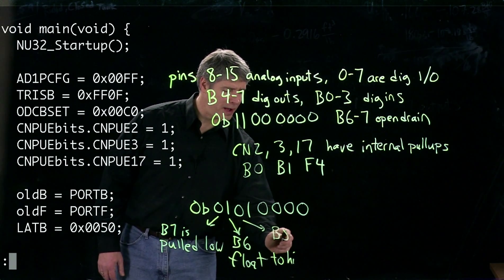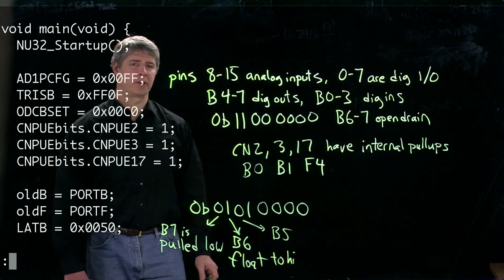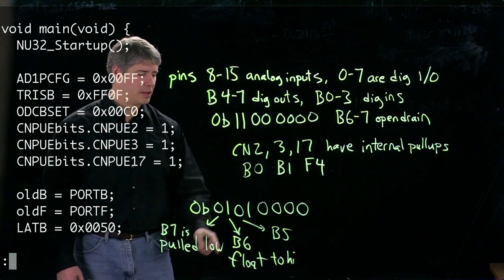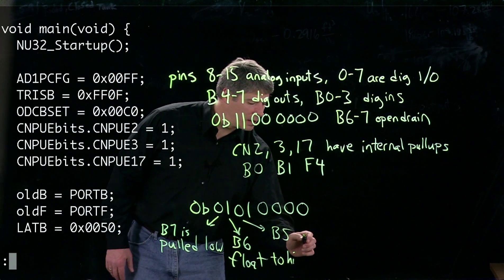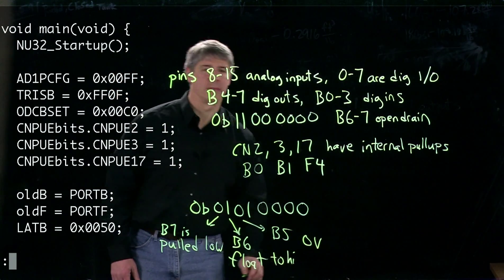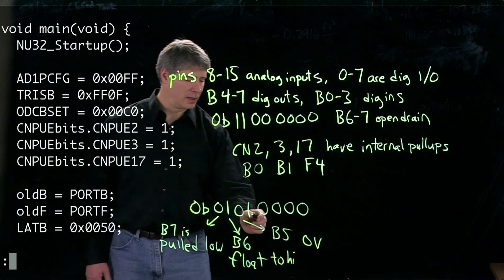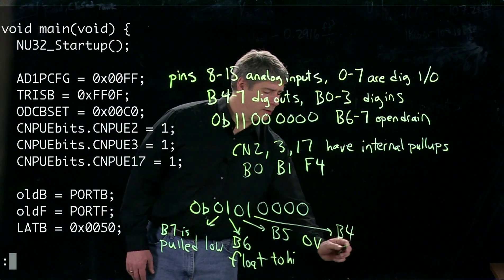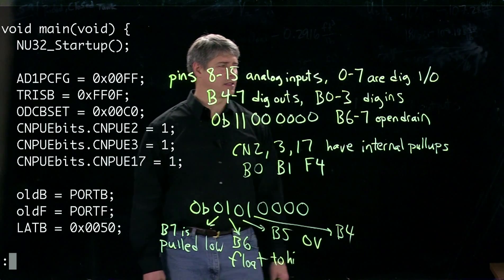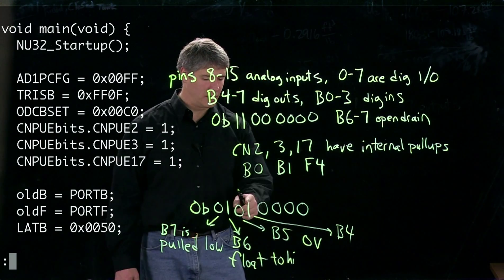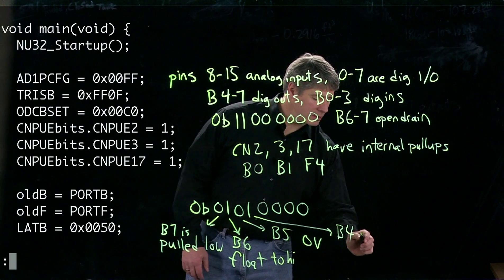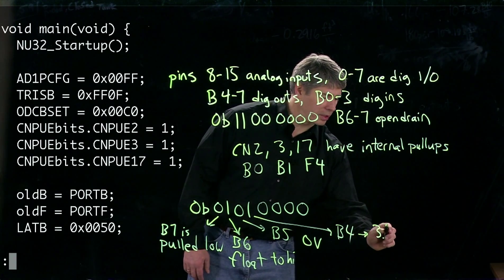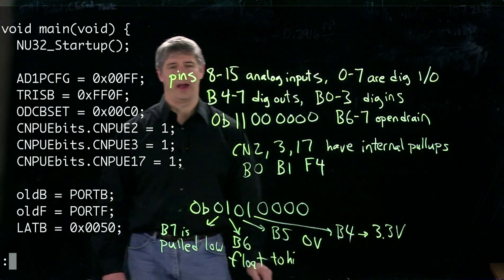Pin B5 here is not an open drain output. It's a typical buffered output, so we send 0 volts to that buffered output. And finally, pin B4, again, is a typical buffered output. We send a 1, so it's going to have 3.3 volts at the output.